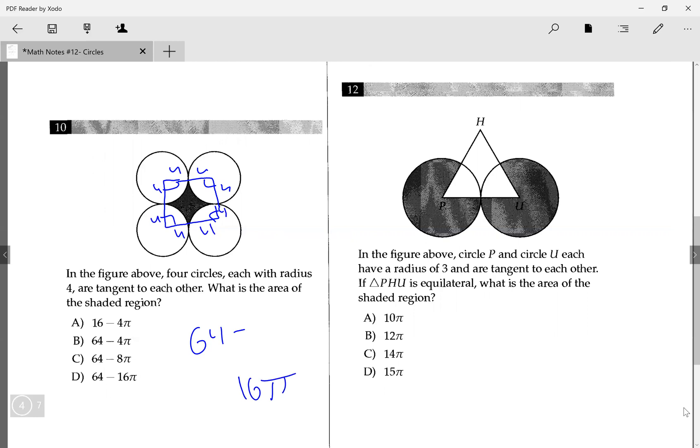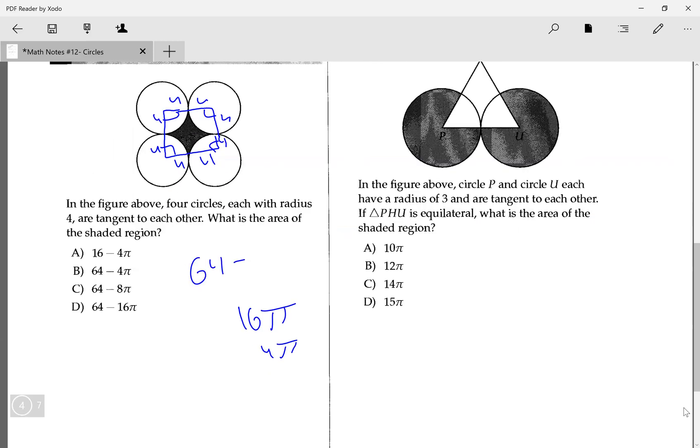That means the area of the total circle is going to be 16π. However, if it's one fourth of that, it would be 4π, but it's 4 of those, so it's back up to 16π. So the area of all of these circle bits is 16π. So it's going to be 64 - 16π gives me the area of the shaded region, which is why D is the right answer here.